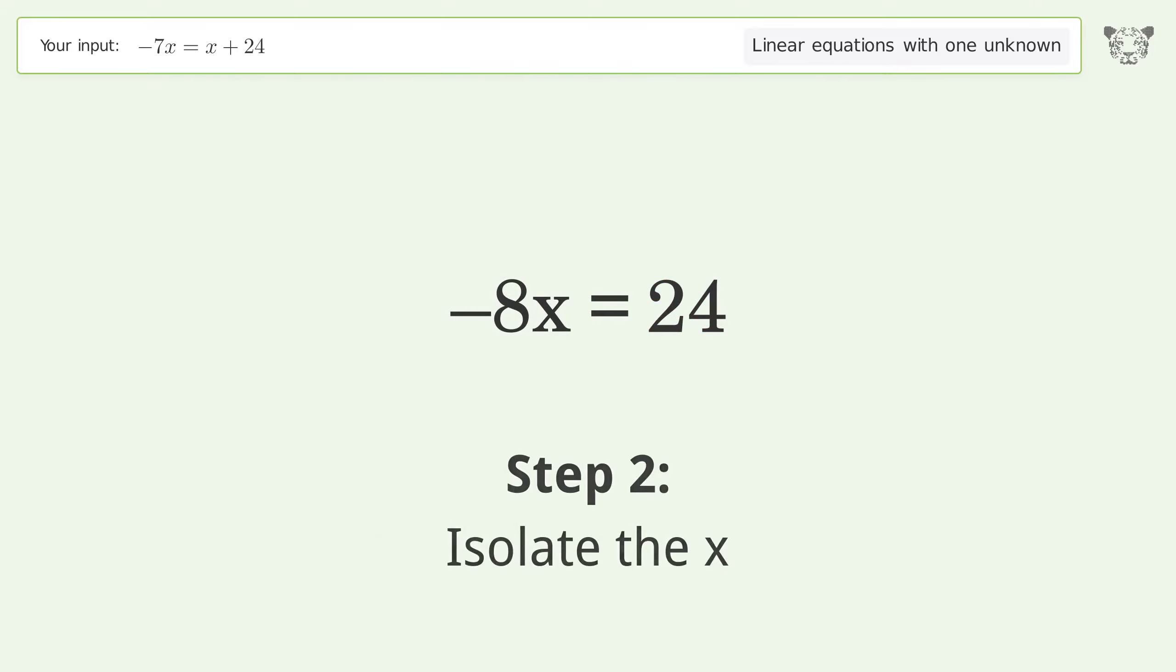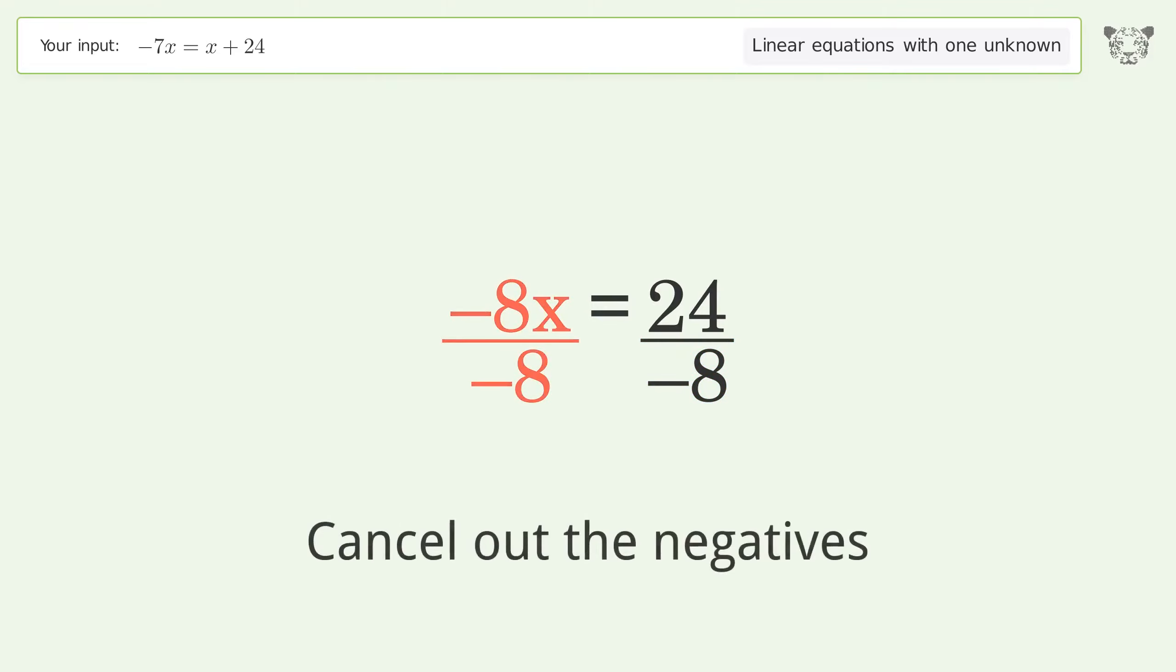Isolate the x. Divide both sides by negative 8. Cancel out the negatives.